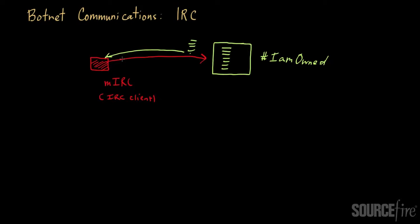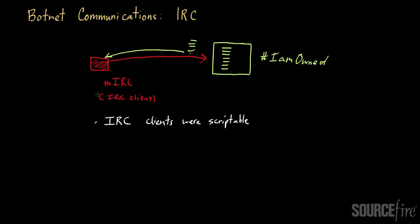Why did IRC become such a popular choice? One reason is that a lot of IRC clients could be easily scripted — they were scriptable. People could augment them without needing to understand all the nuances of how the client worked. A bot master could customize a client like mIRC for his needs: scripting it so that upon installation it automatically connects to a specific IRC server and channel, announces its presence, awaits further instructions, and then parses and carries out those instructions.